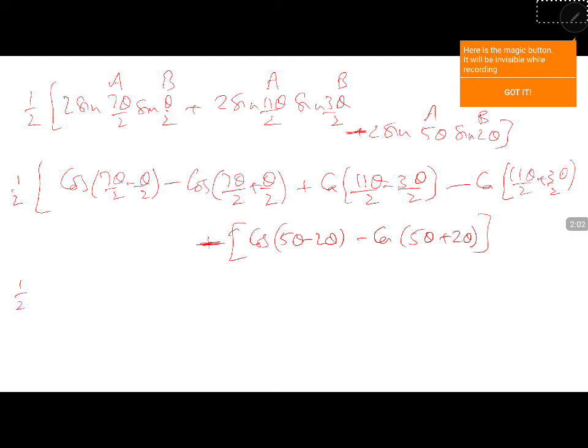Cos of 11 theta by 2 plus theta. So, here I will get 1 by 2 into cos of 7 theta minus theta, 6 theta by 2 is 3 theta minus. 7 theta plus theta, 8 theta by 2 is cos 4 theta plus. 11 theta minus 3 theta 8 theta by 2 is cos 4 theta minus 11 theta plus 3 theta 14 theta by 2 is 7 theta minus cos 5 theta minus 3 theta 3 theta.